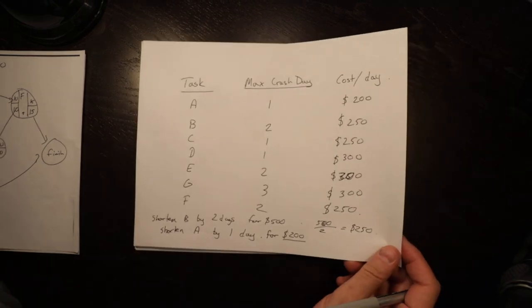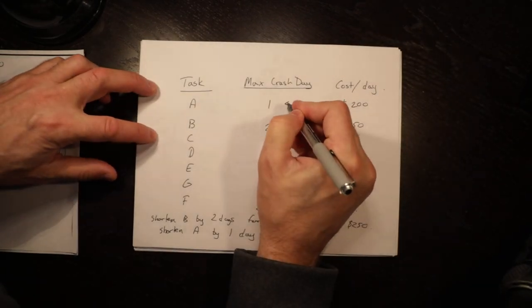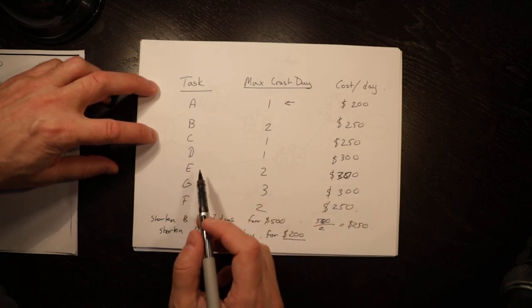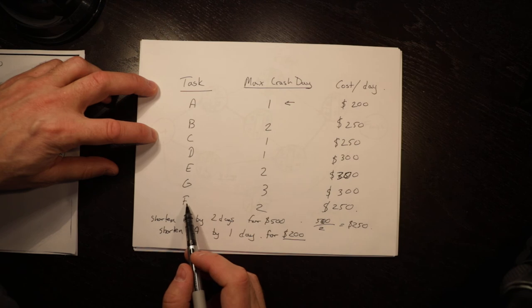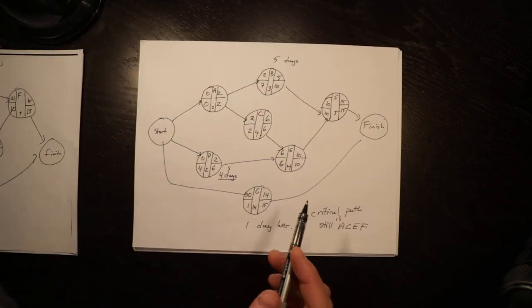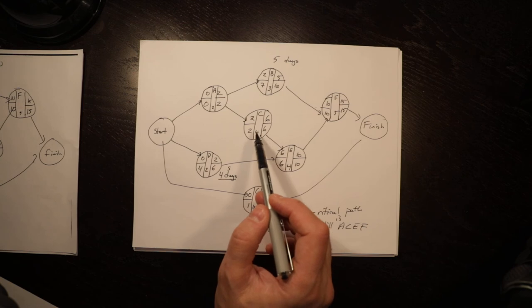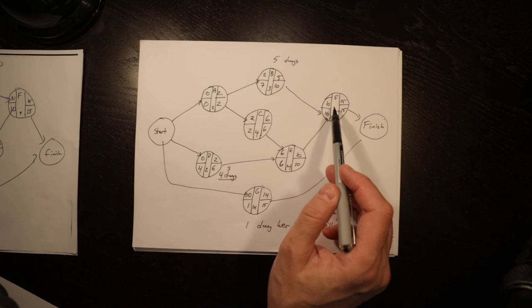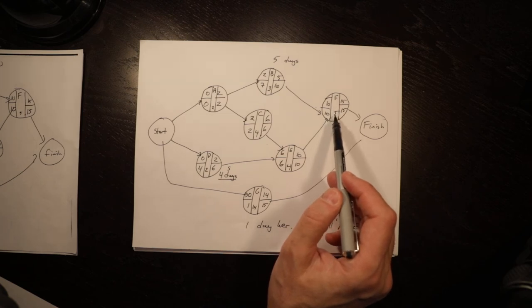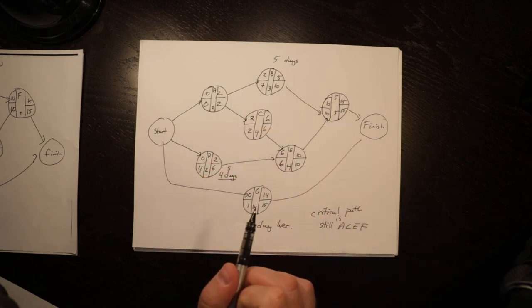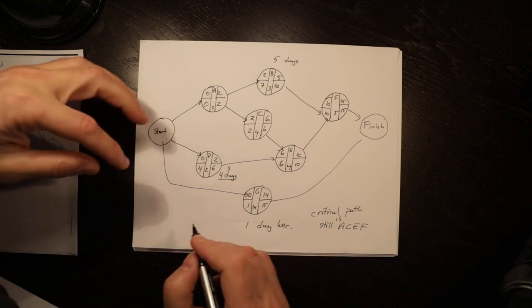Now we'll go back. We can't shorten A anymore because it had a max. So it's C for $250, E for $300, or F for $250. So in this circumstance you could shorten C because it's $250 or you could shorten F because it's $250. I will usually shorten the one that is on more paths. So I'm going to pick F because it prevents another path from becoming critical.